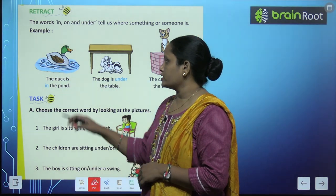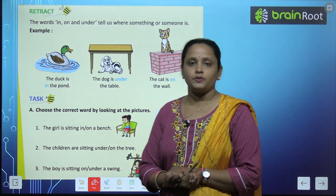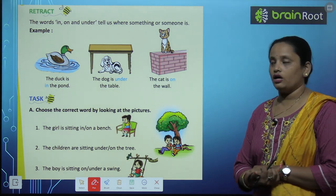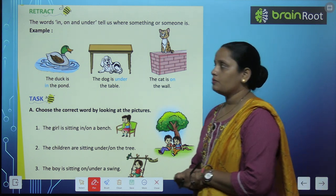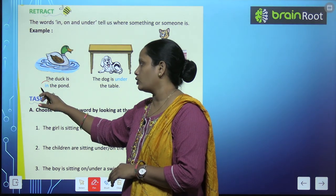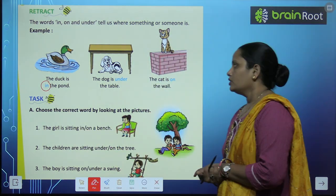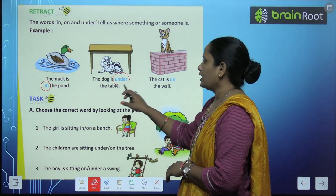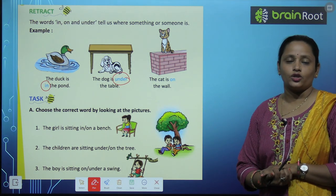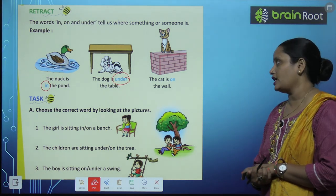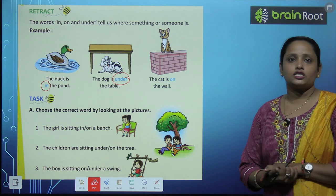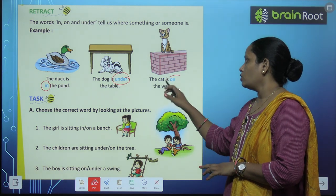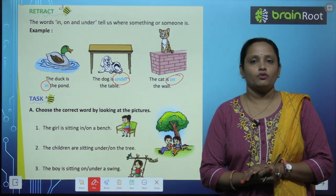Here you can see some pictures. First picture is: a duck is in the pond. Duck kahan hai? Pond mein hai. Toa hamne likha hai: in. The dog is under the table. Dog kahan hai? Table ke neeche hai. Toa under means neeche. The cat is on the wall. On means upar. So the cat is on the wall.